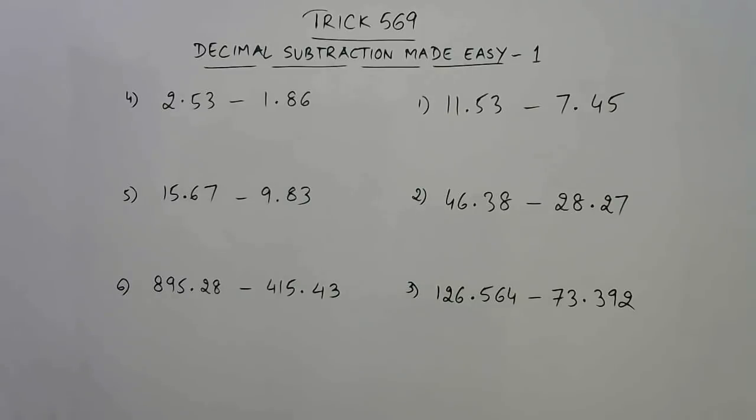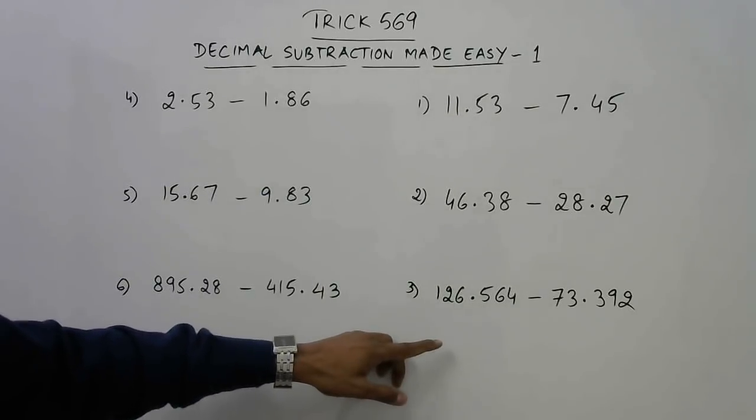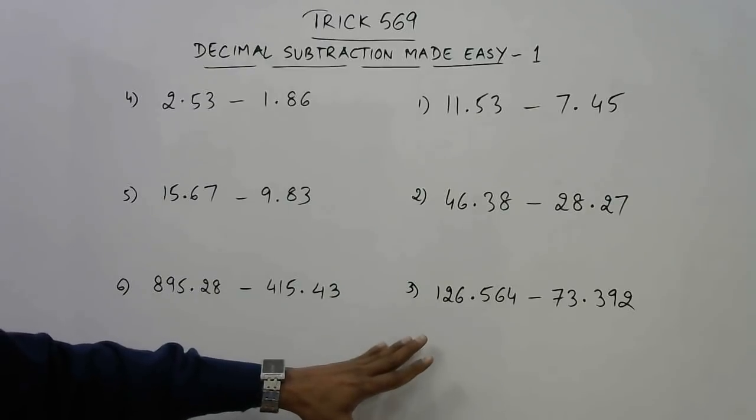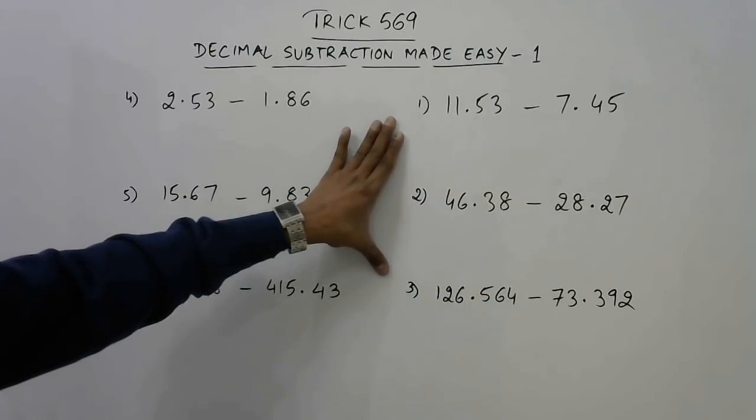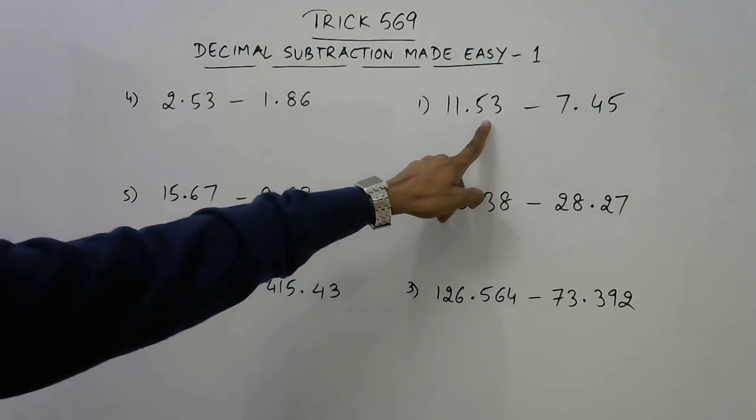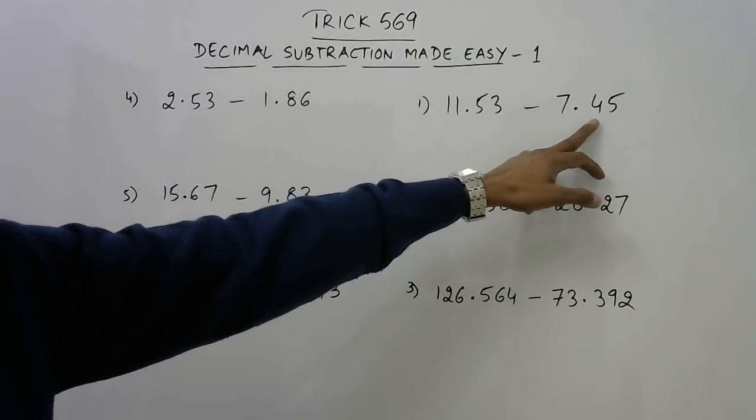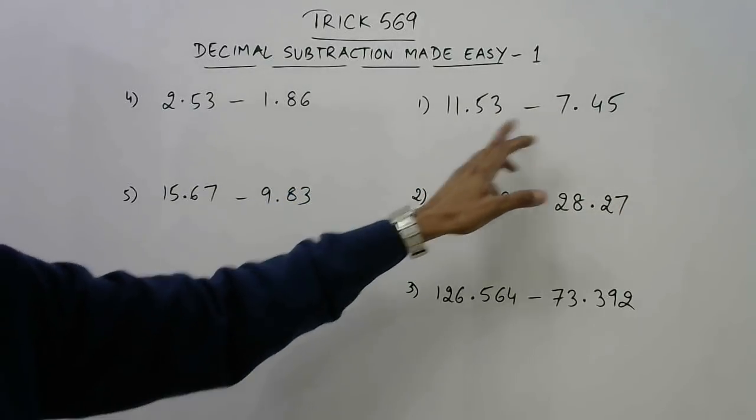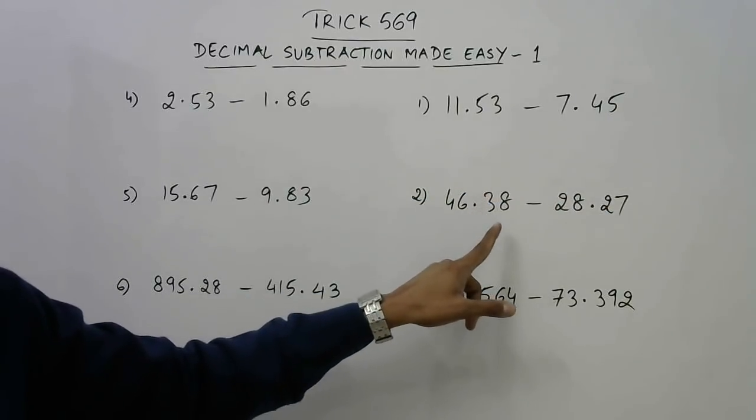Here I have two particular types of problems. On the right hand side, in these three questions there is a special property. The number after the decimal 53 is greater than the number after the decimal here 45. Likewise, 38 and 27, 38 is greater. And 564 and 392, 564 is greater.